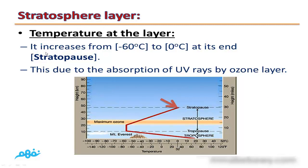Temperature at stratosphere increases from negative 60 degrees Celsius to 0 degrees Celsius at its end or at stratopause. This is due to the absorption of ultraviolet rays by the ozone layer. Absorption of ultraviolet rays increases the temperature of this layer.